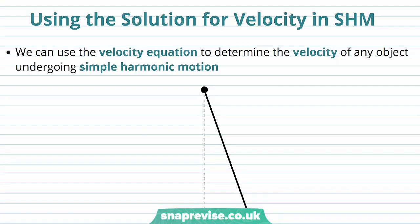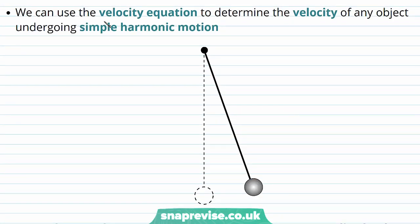We're now going to look at how we can use the solution for velocity in simple harmonic motion. We can use the velocity equation to determine the velocity of any object undergoing simple harmonic motion — for example, a pendulum in simple harmonic motion.